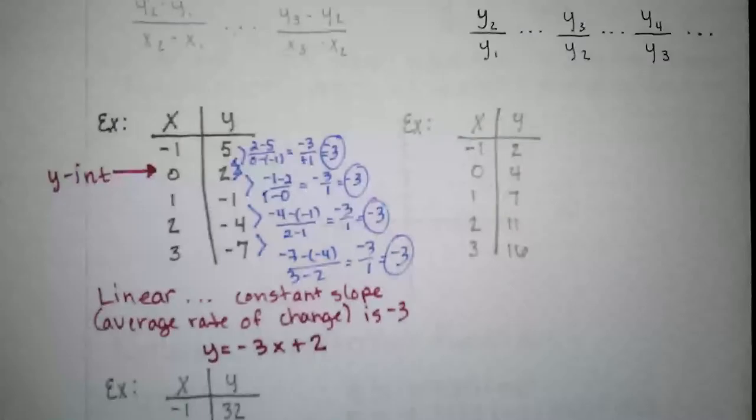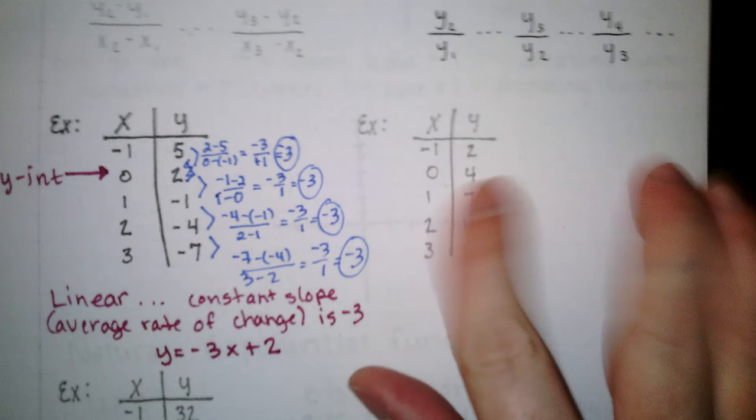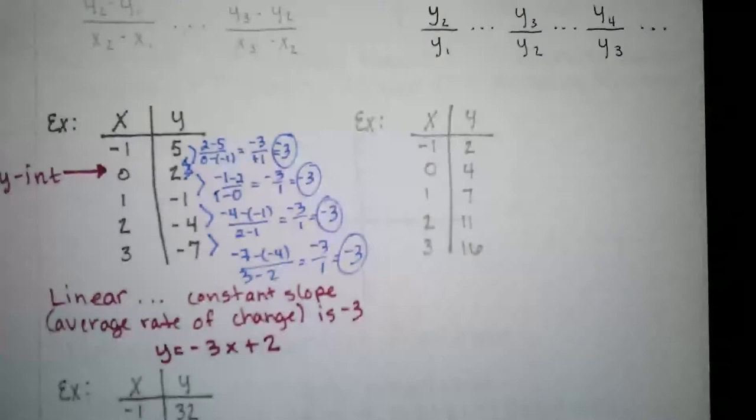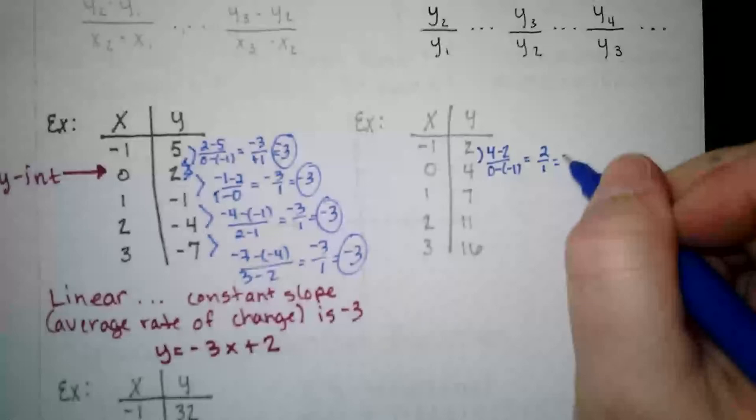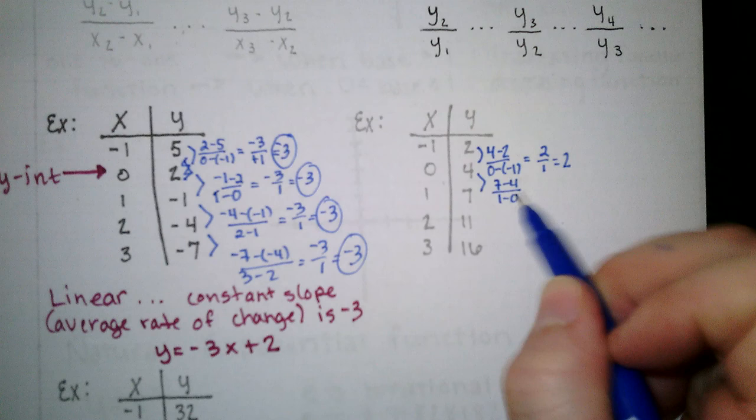Let's check this one. So we'll start by checking the slope. So we go 4 minus 2 over 0 minus negative 1. So that's 2 over 1. So our slope would be 2. Go again. 7 minus 4, 1 minus 0. That is 3 over 1. So we can already tell it is not linear because the slopes don't match up.